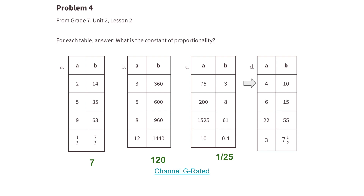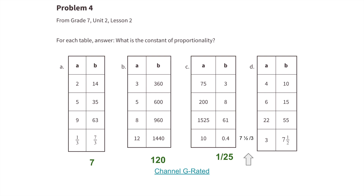Table D: 10 divided by 4 equals 10/4, which is equivalent to 2½. 15 divided by 6 is equivalent to 2½. 55 divided by 22 is also equivalent to 2½. And 7½ divided by 3 is equivalent to 2½. So for table D, the constant of proportionality is 2½.